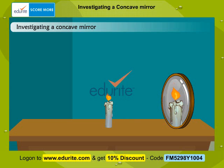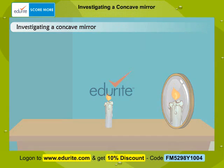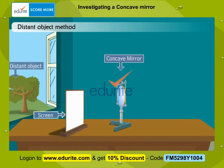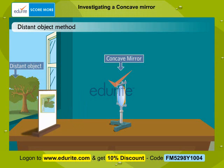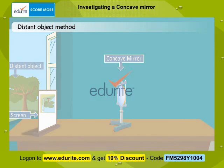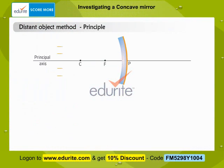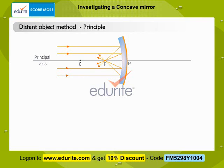First we find out the focal length of this concave mirror. The distant object method is the simplest way to find the focal length. The rays of light coming from a distant object are always parallel to each other. These rays of light after reflection from a concave mirror converge at a point on the principal axis called the focus. The distance between the pole of the mirror and the focus gives the focal length.